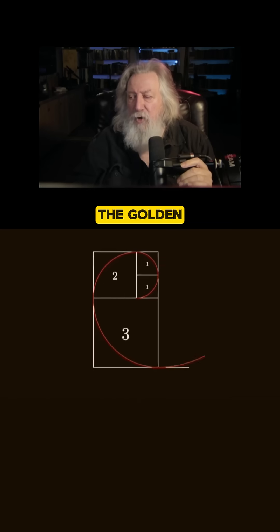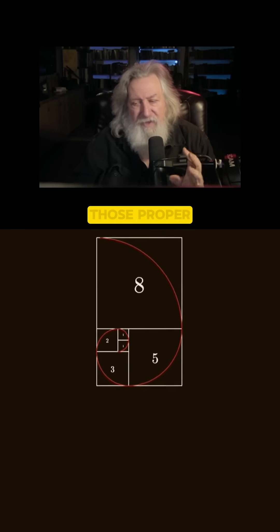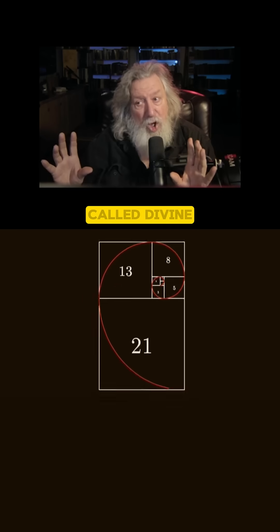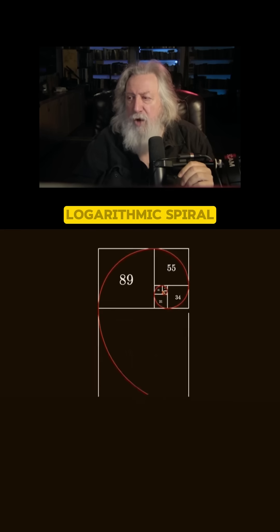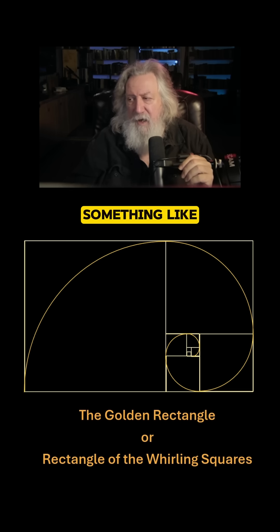Because once you know how to lay out the golden rectangle with those proper, as they have been called, divine proportions, you can create this logarithmic spiral that looks something like this, that we actually find reproduced in various natural phenomena.